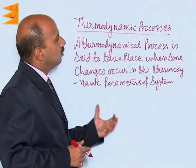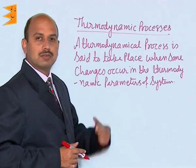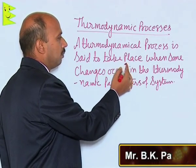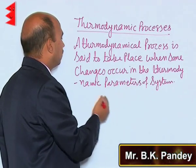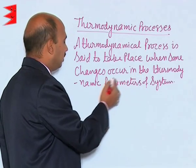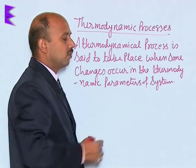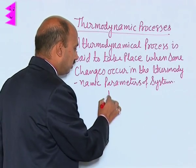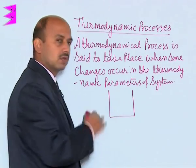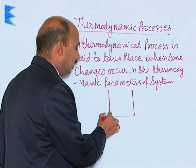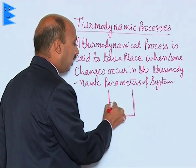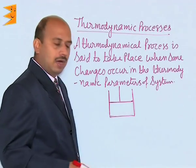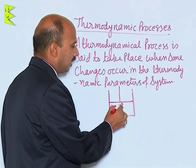What is a thermodynamic process? A thermodynamical process is said to take place when some changes occur in the thermodynamic parameters of the system. Suppose you have taken a cylinder like this, and this cylinder is having a piston here, and here is some gas — we can take an ideal gas.